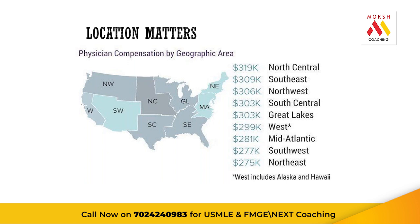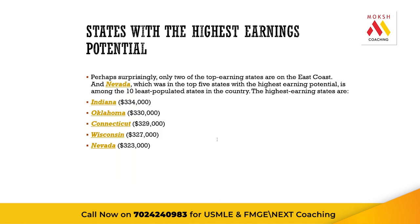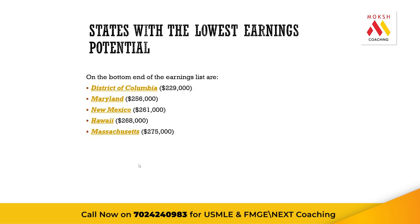California has a high salary but also high taxes — you have to understand the US tax system. In Texas there is no state income tax, though there are obviously other taxes. In New York there is a state income tax. So you need to factor in the tax system when choosing your location. The lowest-earning areas are the northeast followed by the southwest. States with the highest earning potential include those on the east coast, Nevada, Oklahoma, Wisconsin, Connecticut, and Indiana — partly because of high opioid rates driving demand. The lowest-earning states include New Mexico, Hawaii, Maryland, Washington D.C., and Massachusetts.